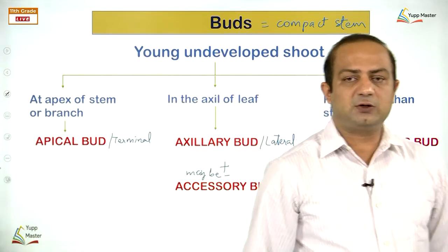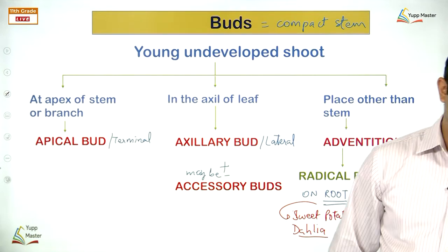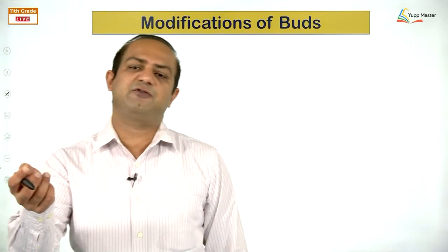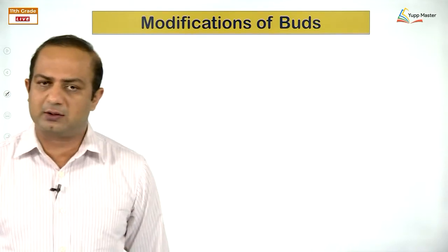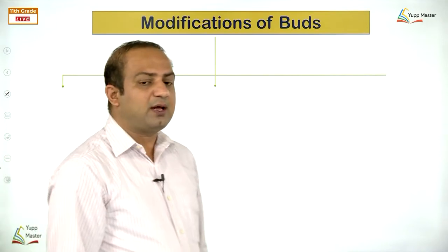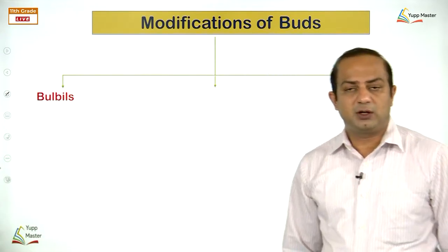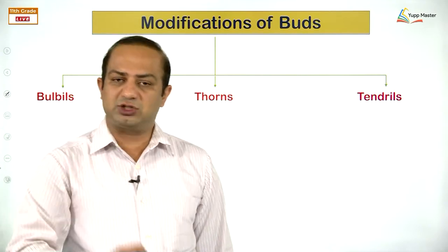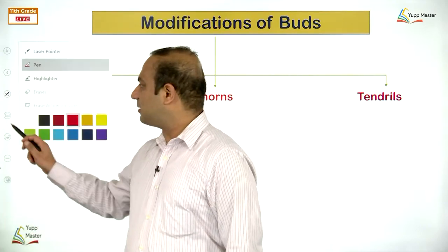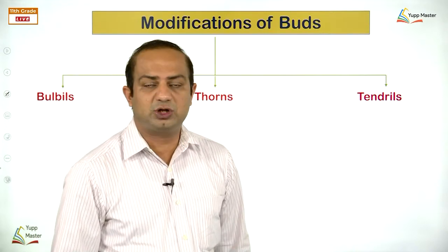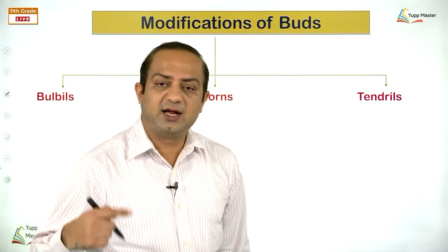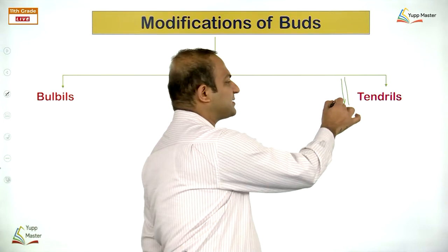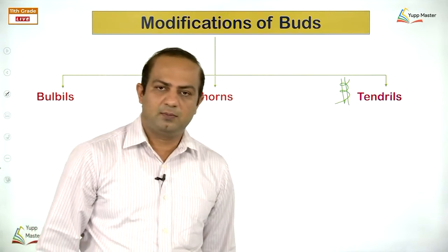Thorns develop from the axillary bud in examples like citrus and bougainvillea, where the vegetative bud turns into a pointed, thick, woody structure. The third bud modification is the tendril — a thin wire-like structure that coils around a mechanical support. In Vitis (grapevine) and Passiflora, the axillary bud is modified into a tendril. In Cucurbits, the terminal bud is modified into a tendril.